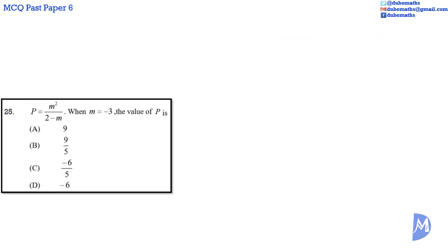Question 25: P is equal to M squared over 2 minus M. When M is equal to negative 3, then P is equal to negative 3 squared over 2 minus negative 3.